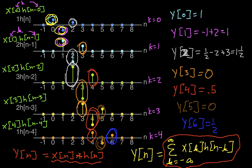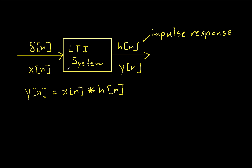Hopefully this has made sense. To conclude: we have developed the fact that the output of an LTI system to an arbitrary input is given in terms of the impulse response through this convolution equation, and we've defined the summation that defines this convolution. Thanks for watching.